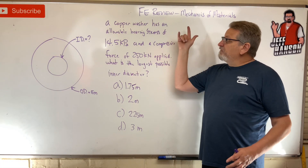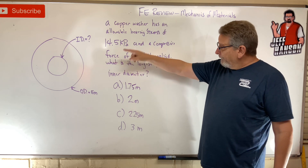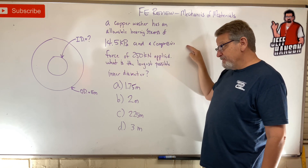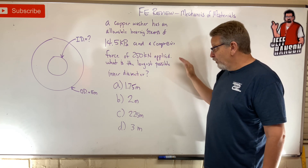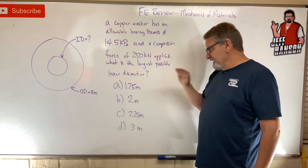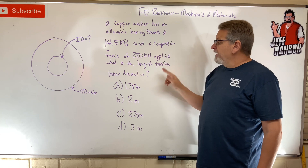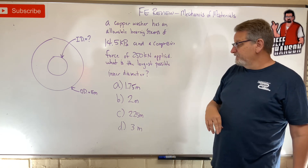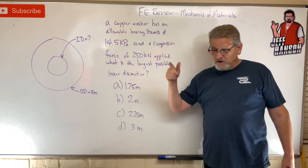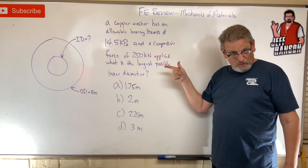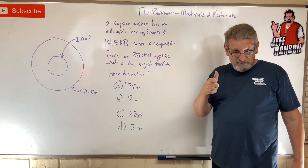Welcome back — FE review problem, mechanics of materials. We've got a big copper washer with an allowable bearing stress of 14.5 kilopascals, and a compressive force of 250 kilonewtons is applied — so it's being squished. What is the largest possible inner diameter you can have? See if you can solve this — press pause and when you come back I'll work it for you.